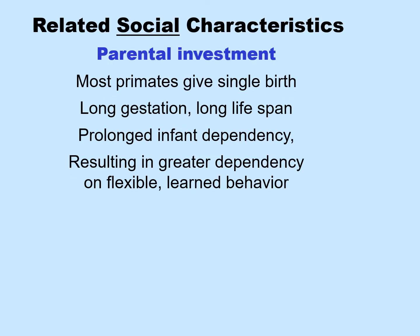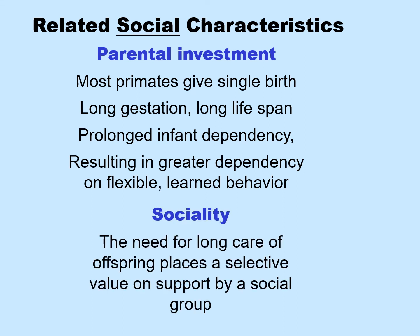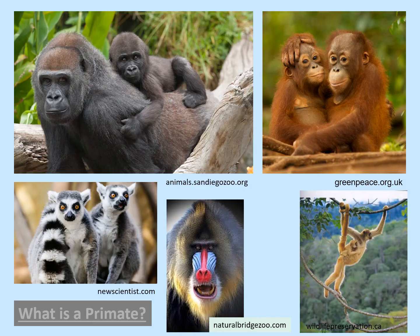When we look at related social characteristics, as opposed to physical characteristics, we see parental investment. Most primates give single birth with a long gestation associated with a long lifespan, and this prolonged infant dependency results in greater dependency of the infant on their parents. Infants depend on their parents to learn flexible, learned behavior. This results in sociality — the need for long care of offspring places a selective value on support by a social group. I've already asked you to watch the linked video, 'What is a Primate?'